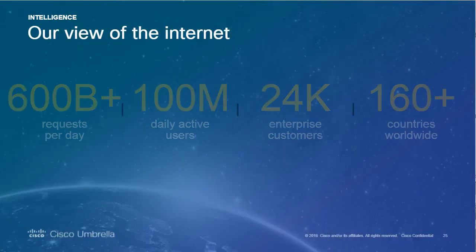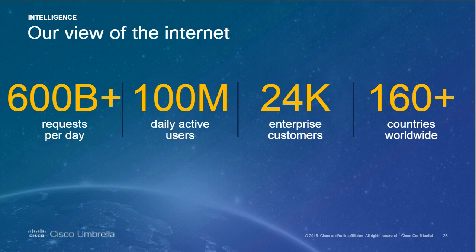Some metrics: OpenDNS before it was acquired by Cisco was a very popular protection for home users. We had hundreds of millions of users even before the acquisition. We now have over 600 billion requests a day — with a B — coming through the Umbrella network, over 100 million active users, 24,000 enterprise customers, and we're in 160 countries.